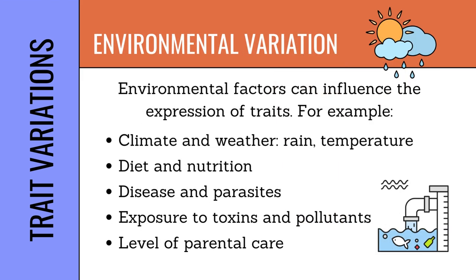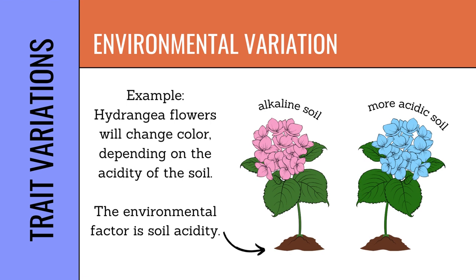Regarding environmental variation, the following environmental factors can influence the expression of traits: climate and weather, rain, temperature, diet and nutrition, disease and parasites, exposure to toxins and pollutants, and level of parental care. For example, hydrangea flowers will change color depending on the acidity of the soil — the environmental factor here is soil acidity.